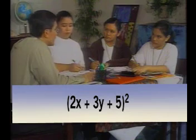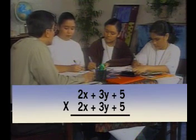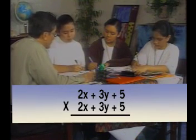Let us now discover the special characteristics of the square of a trinomial. For example, the quantity 2x plus 3y plus 5 squared, multiplying vertically using the long method we get...